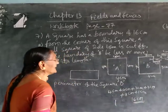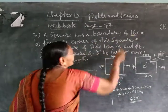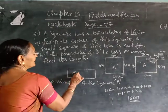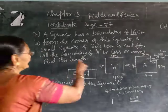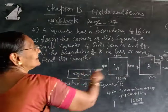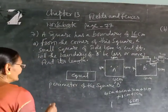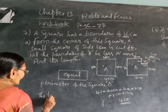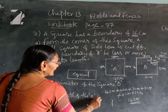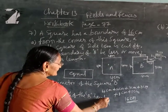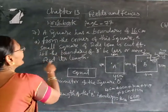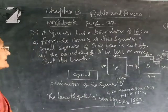Shape B boundary is 16 centimeters and shape A boundary given is also 16 centimeters. So both boundaries are the same — equal. Therefore you write it is equal. The length of the boundary of shape B is 16 centimeters, same as shape A. Both are same.